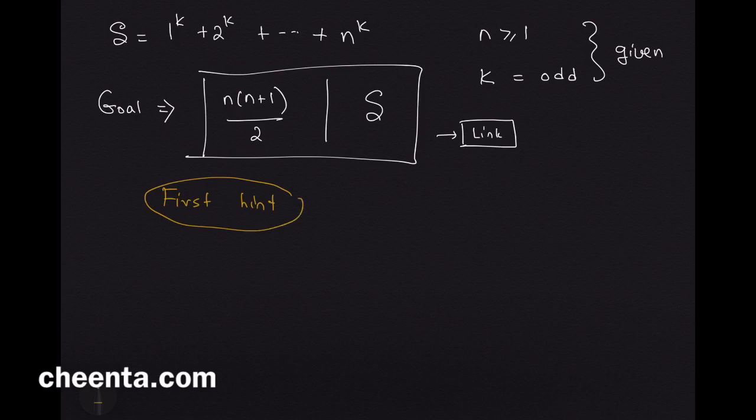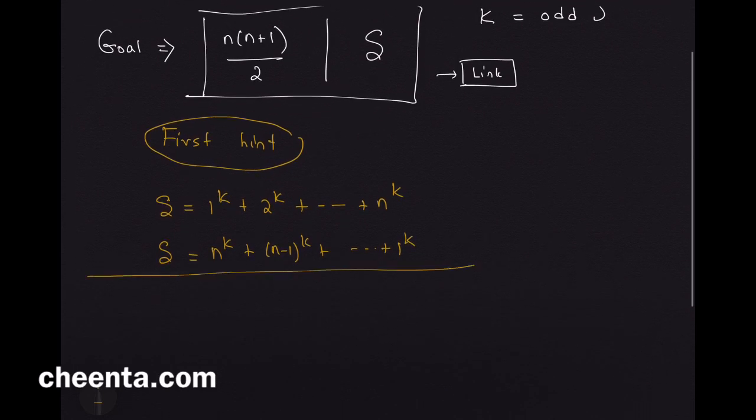It's like this that if you look at this expression S you can write it in the other direction. So let's write a copy of S but write it in the other direction. And then we will be adding this up. So 2 times S is equal to 1 to the power k plus n to the power k. We will group them up.